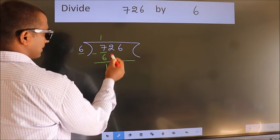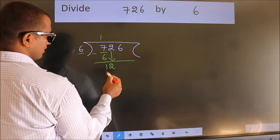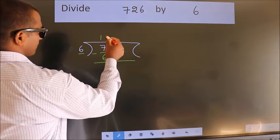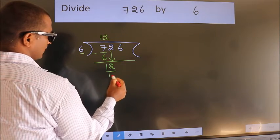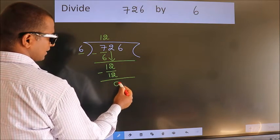After this, bring down the beside number. So 2 down. So 12. When do we get 12 in 6 table? 6 twos, 12. Now we subtract. We get 0.